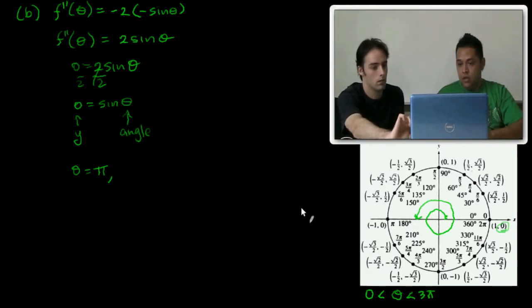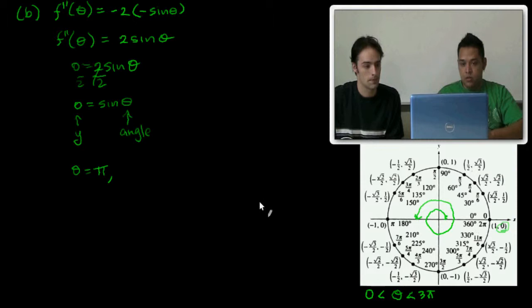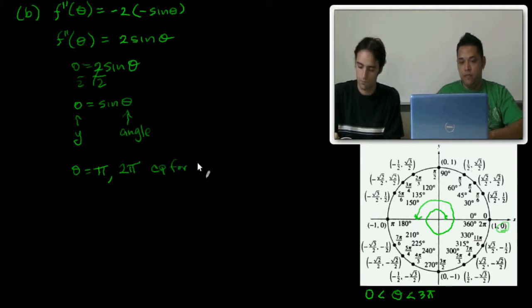If we wrap around, it's going to overlap at 2π, which we can use now. So we would also have 2π. Those are going to be our critical points for our second derivative.